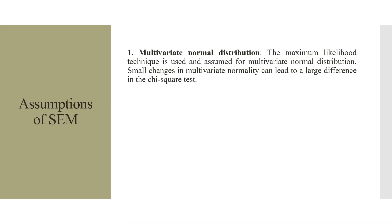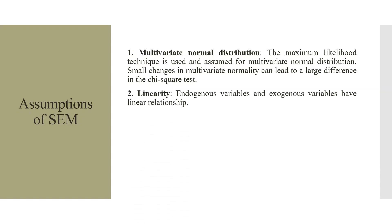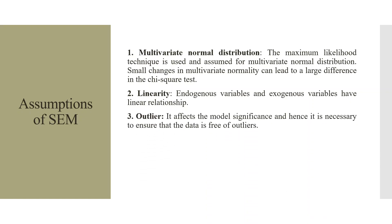Assumptions of SEM. The first assumption is multivariate normal distribution. The maximum likelihood technique is used and assumes multivariate normal distribution. Small changes in multivariate normality can lead to large differences in the chi-square test, so it is essential that you have multivariate normality. Linearity: endogenous and exogenous variables should have a linear relationship among them. There should not be any outliers present in your data, as outliers affect model significance.